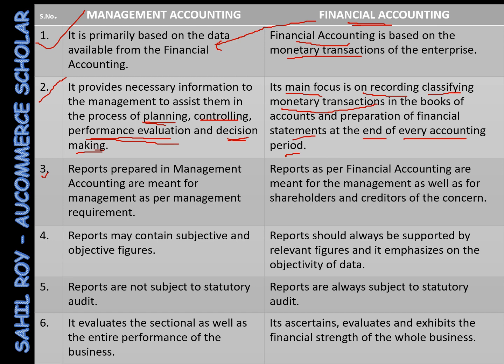The third difference: the reports prepared in management accounting are meant for management as per management requirements. The reports in financial accounting, on the other hand, are meant for management as well as for the shareholders and creditors of the firm.